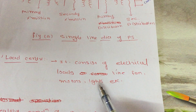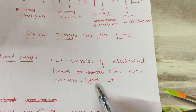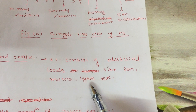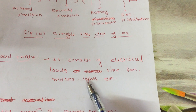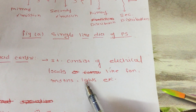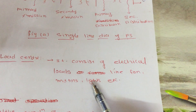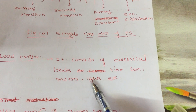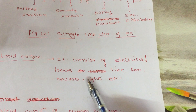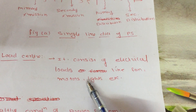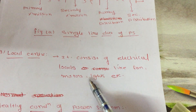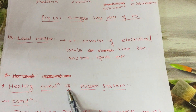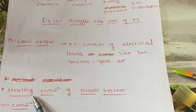This is the introduction of the electrical power system. Switchgear and protection is used for protection of this electrical power system. It means when a fault occurs on the electrical power system, we have to isolate the faulty part from the healthy part. In normal condition, the power system always remains healthy.